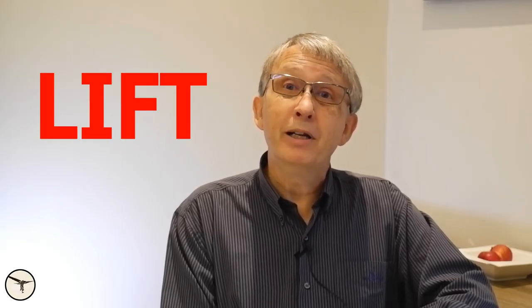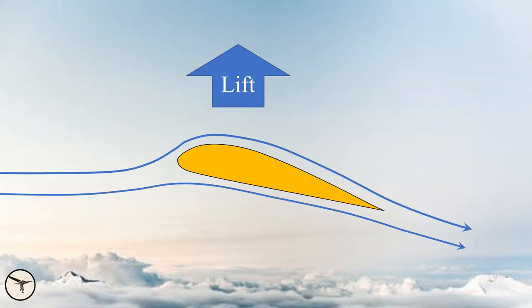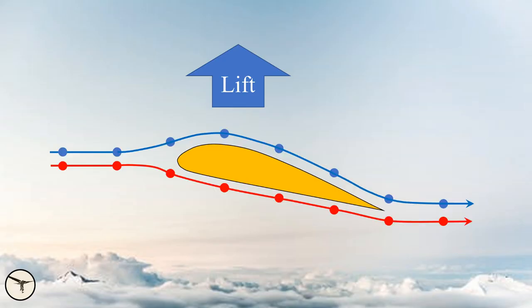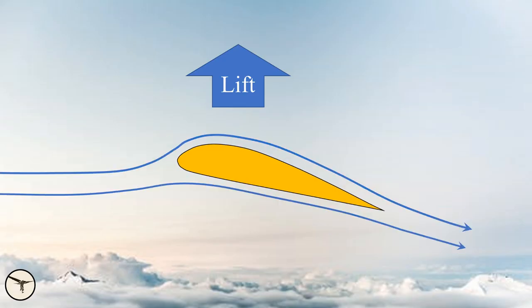If you have very little time to explain lift, then this is the way to do it. Lift is created when a wing pushes air downwards — in other words, redirecting the airflow. And please note how this figure is made: it's not this, or this, but this.